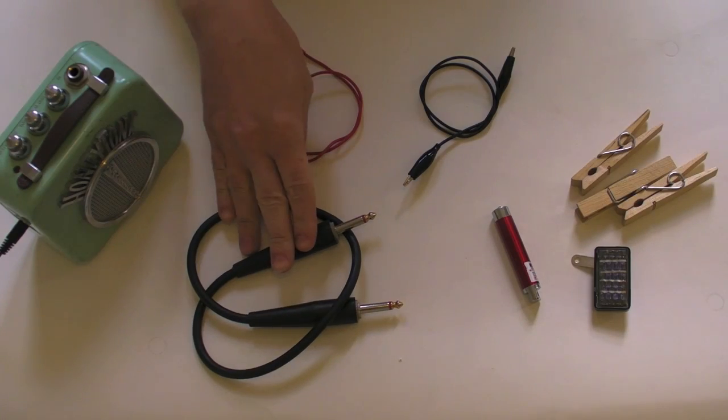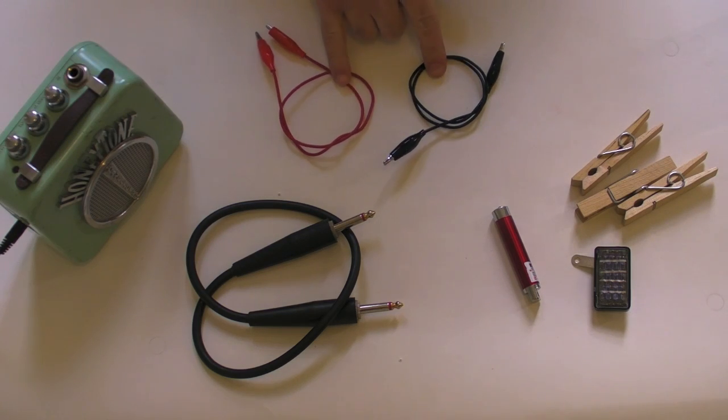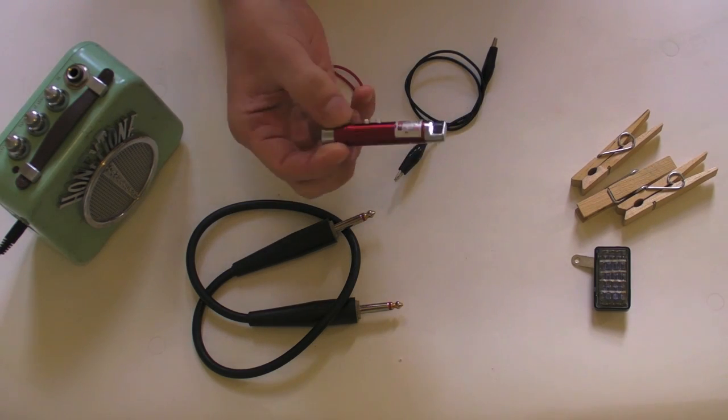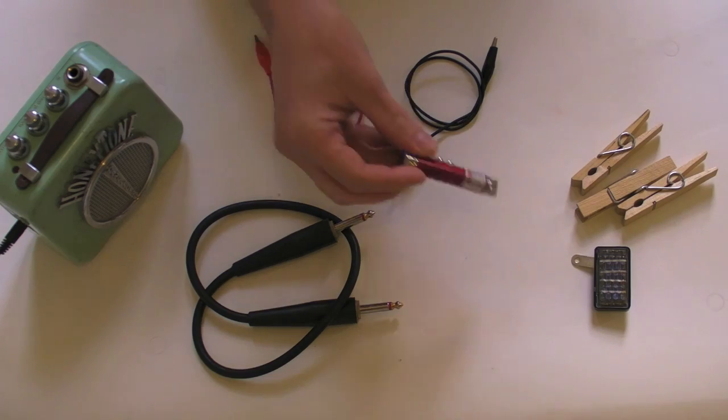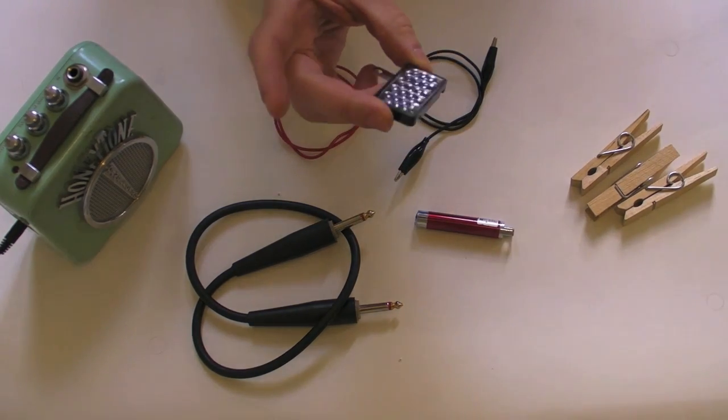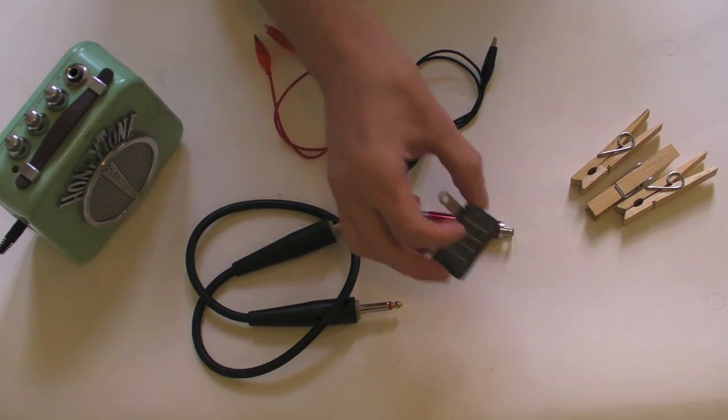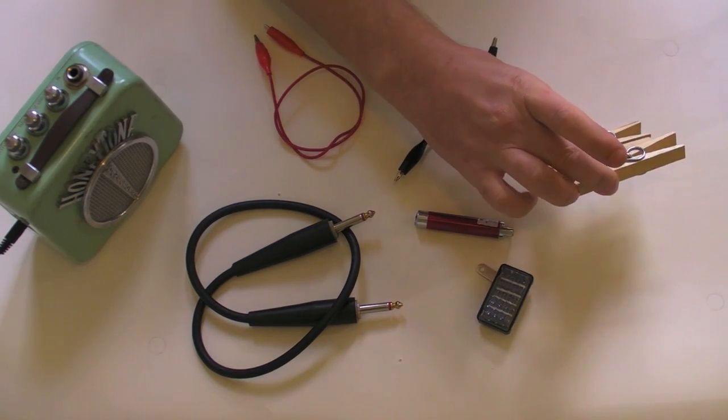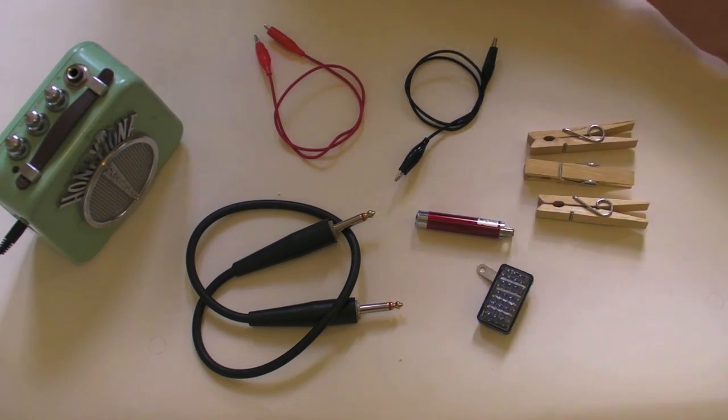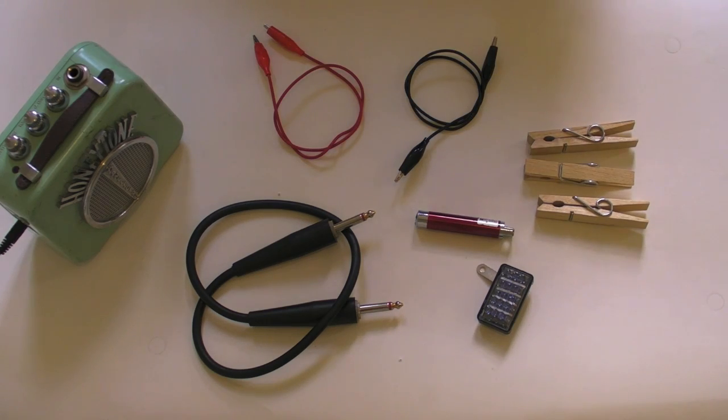We'll need a jack lead, a little amplifier, a couple of crocodile clips, a little cheap laser pointer that's like one pound fifty, and this is a solar cell which is very low power and it's about one pound fifty as well, and a couple of clothes pegs and a nice cup of tea which is very important.